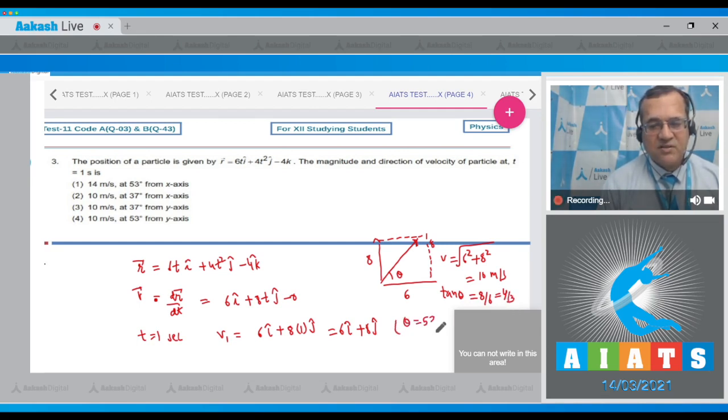So 8 by 6 means 4 by 3. If it is 4 by 3, then obviously theta equals 53 degrees. Looking at the options, answer is 10 meters per second, but the angle with the y-axis will be 37 degrees. So the answer is option 10 meters per second at 37 degrees from the y-axis, which is option number three.